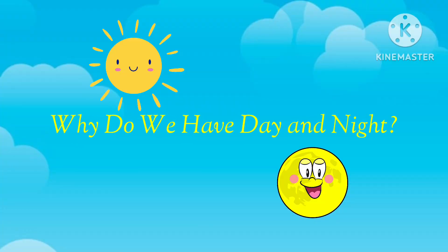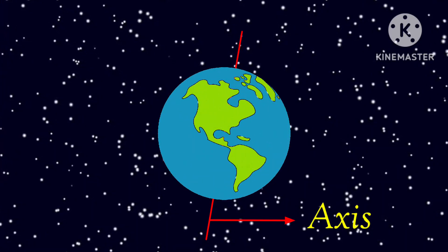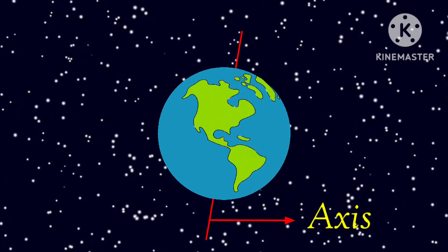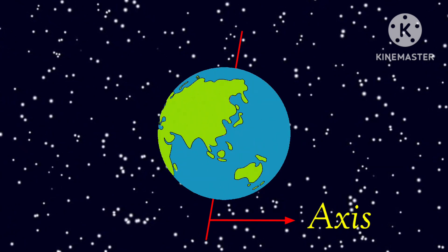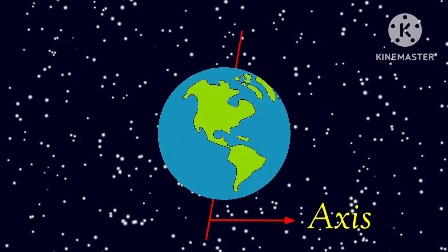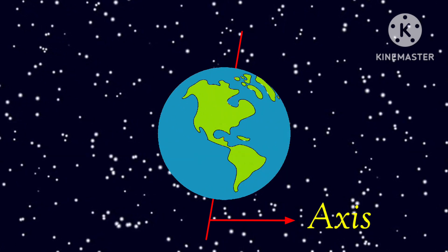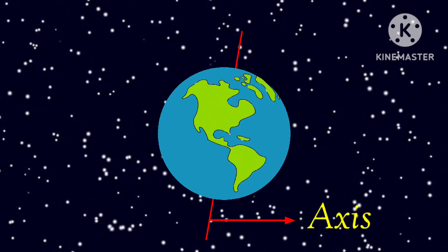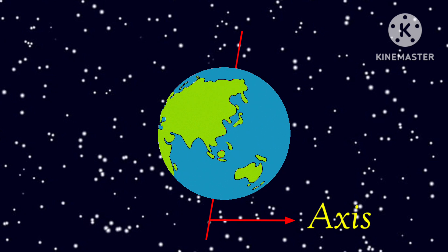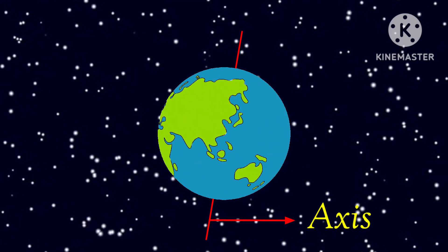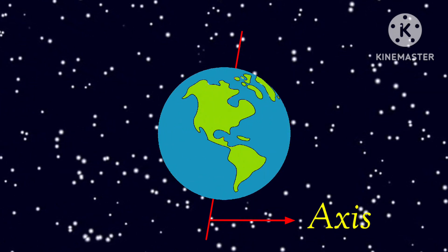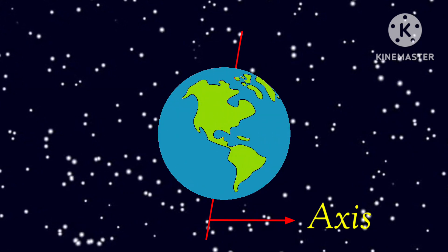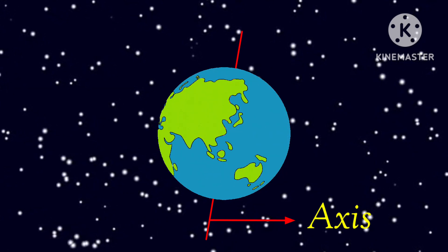Why do we have day and night? We get day and night because Earth is round and it rotates on an imaginary line called an axis. Earth rotates on its axis and takes 24 hours to complete one rotation. This 24-hour period is called one day, and it includes both day and night.